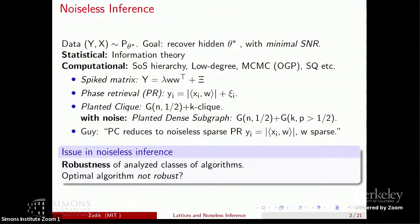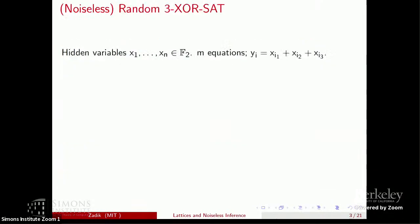Our community tries to understand these models without noise by analyzing the same class of algorithms: sum-of-squares hierarchy, low-degree methods, MCMC, spectral methods, SQ methods. But this class of algorithms is actually robust to a certain amount of noise. So conceivably, we could be missing the optimal algorithm for a lot of these noiseless models. If we care about the planted clique conjecture, we should also care about noiseless and non-robust optimal algorithms.